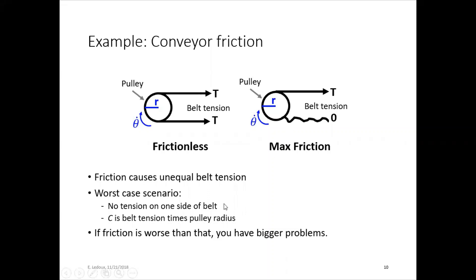So this is the worst case scenario. So you get the C value, belt tension times pulley radius. Now if it's worse than that, you have bigger problems. You probably need to figure out what is going on with your system or maybe your design is just bad.